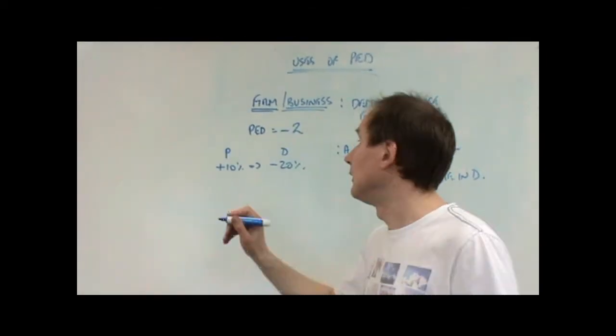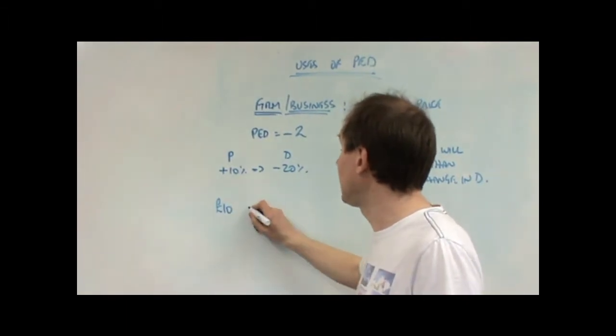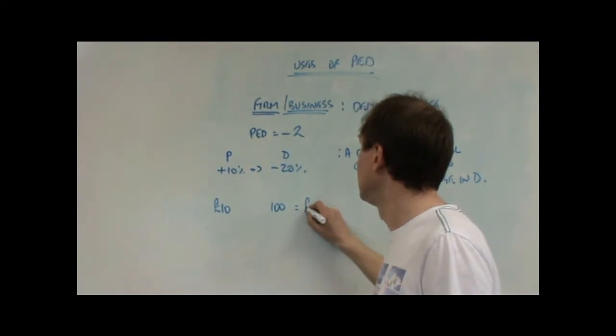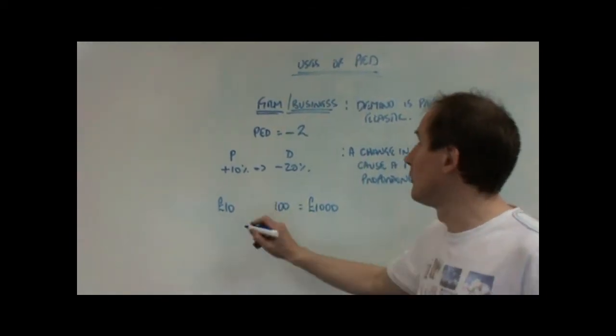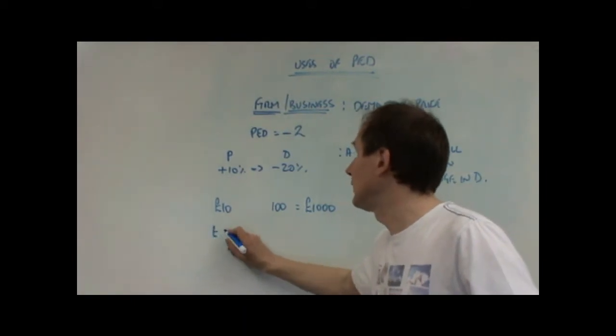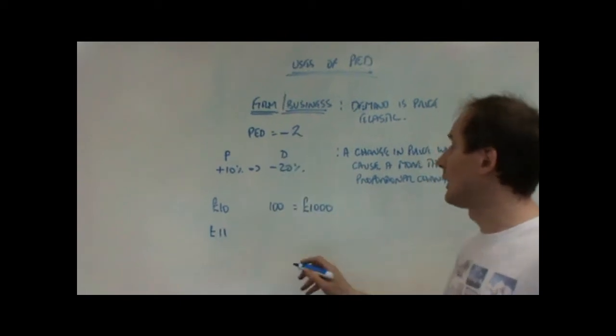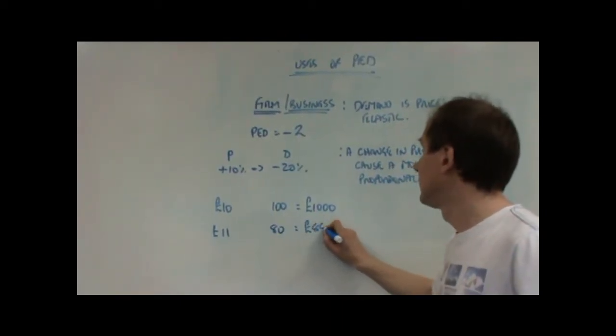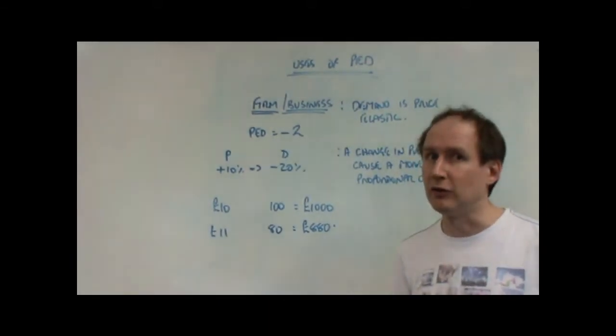Let's use a numerical example to see. Suppose that price was £10, and demand initially was 100 units. Then initially, revenue is £1,000. Suppose the firm puts its price up to £11, a 10% increase. What's going to happen is that demand is going to fall to 80. £11 times 80 is £880. So what's happened is that revenue has gone down.